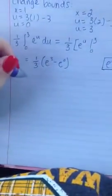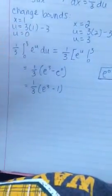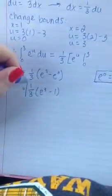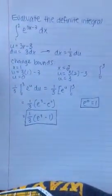To further simplify this, e to the 3 minus 1 times 1 third. And that is our final answer.